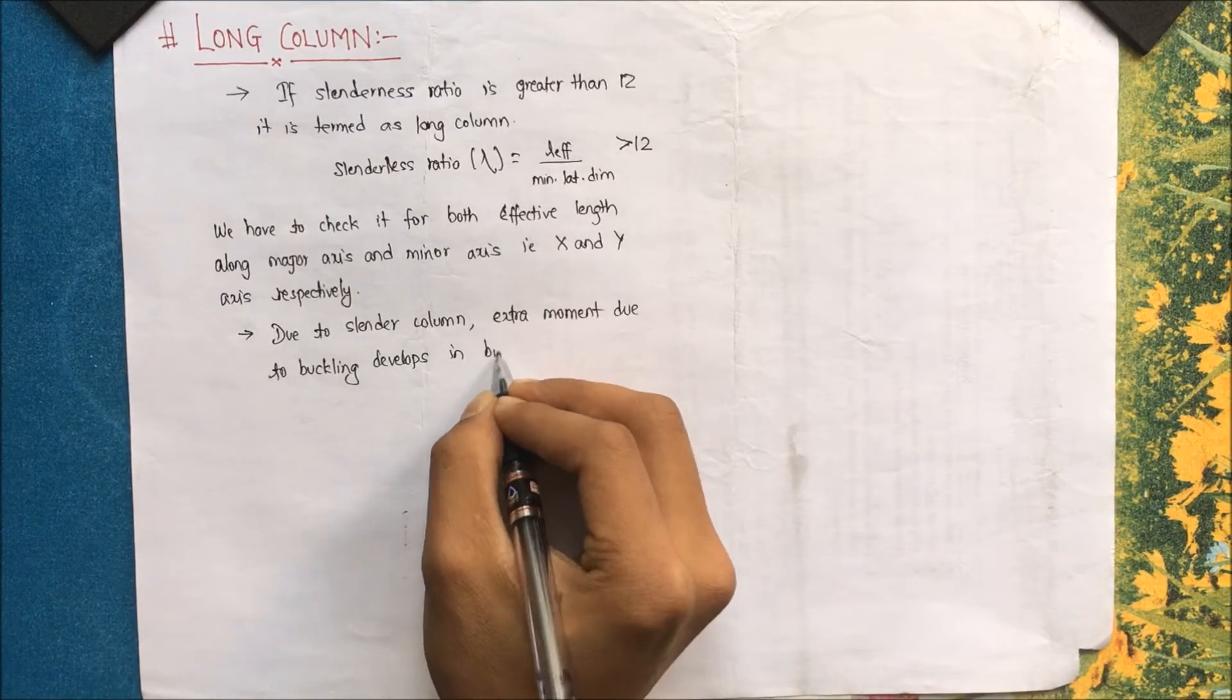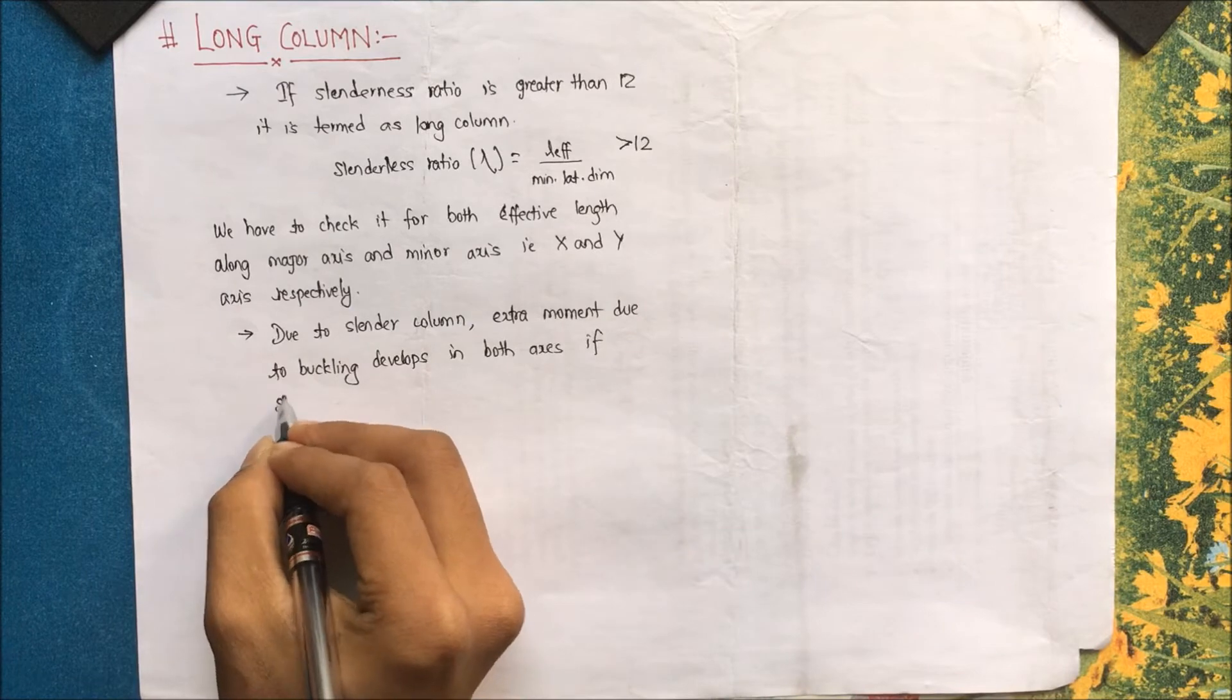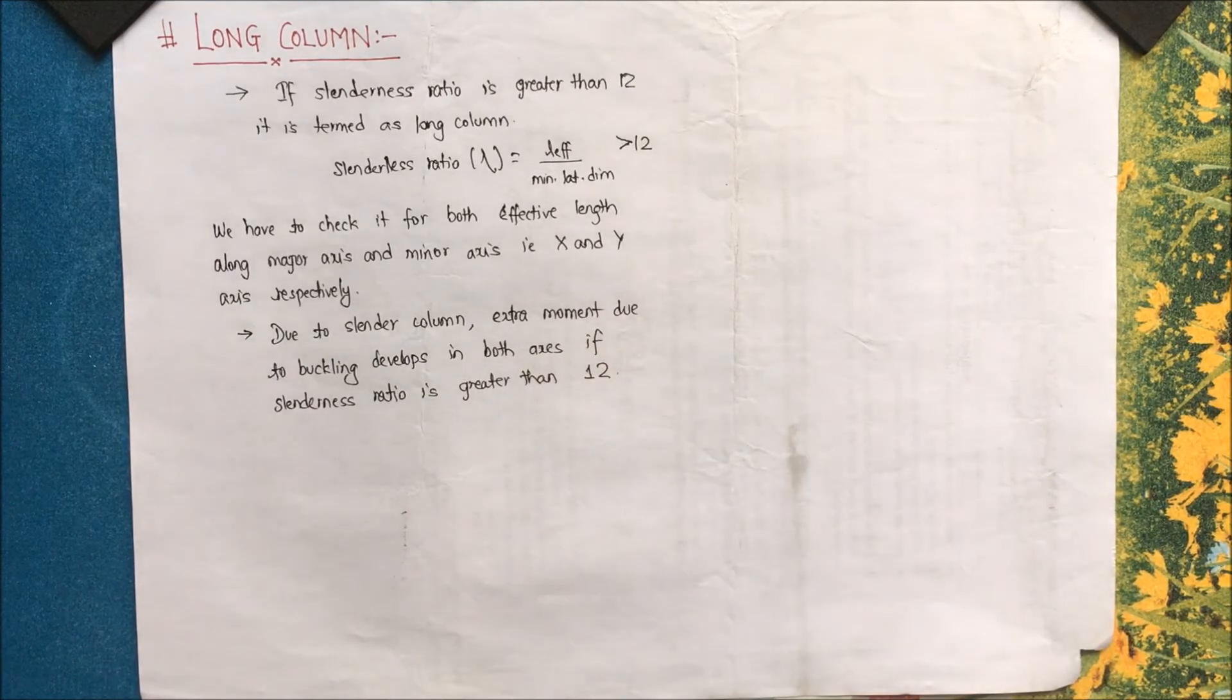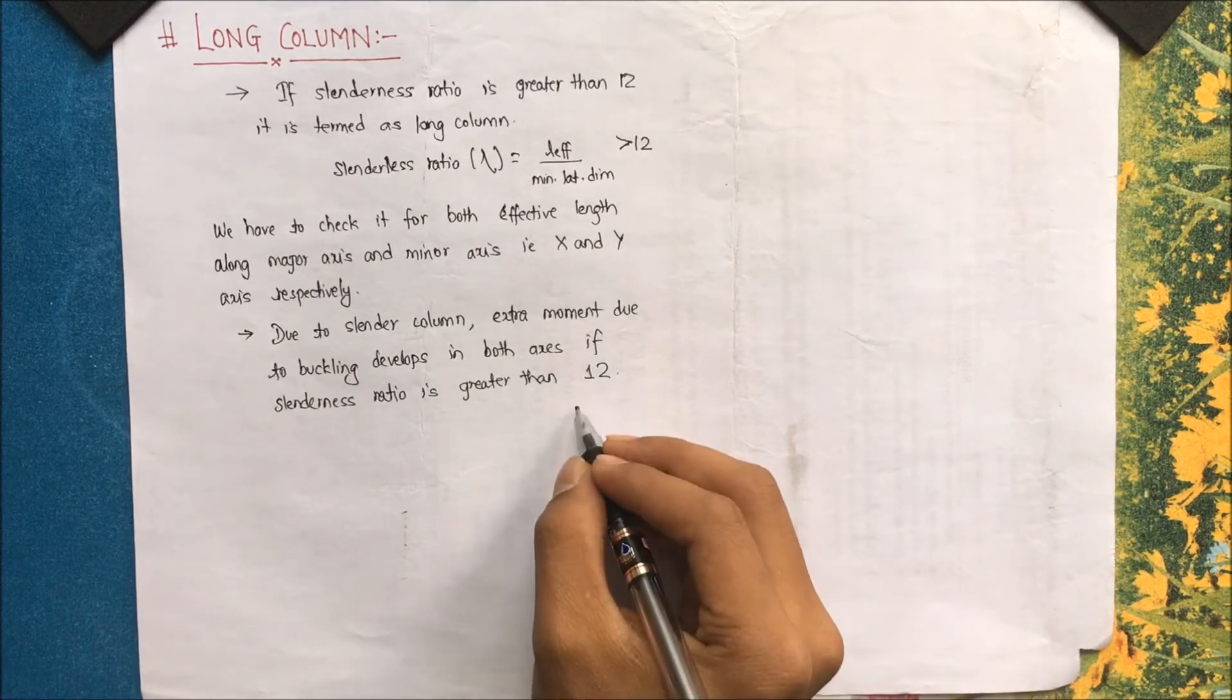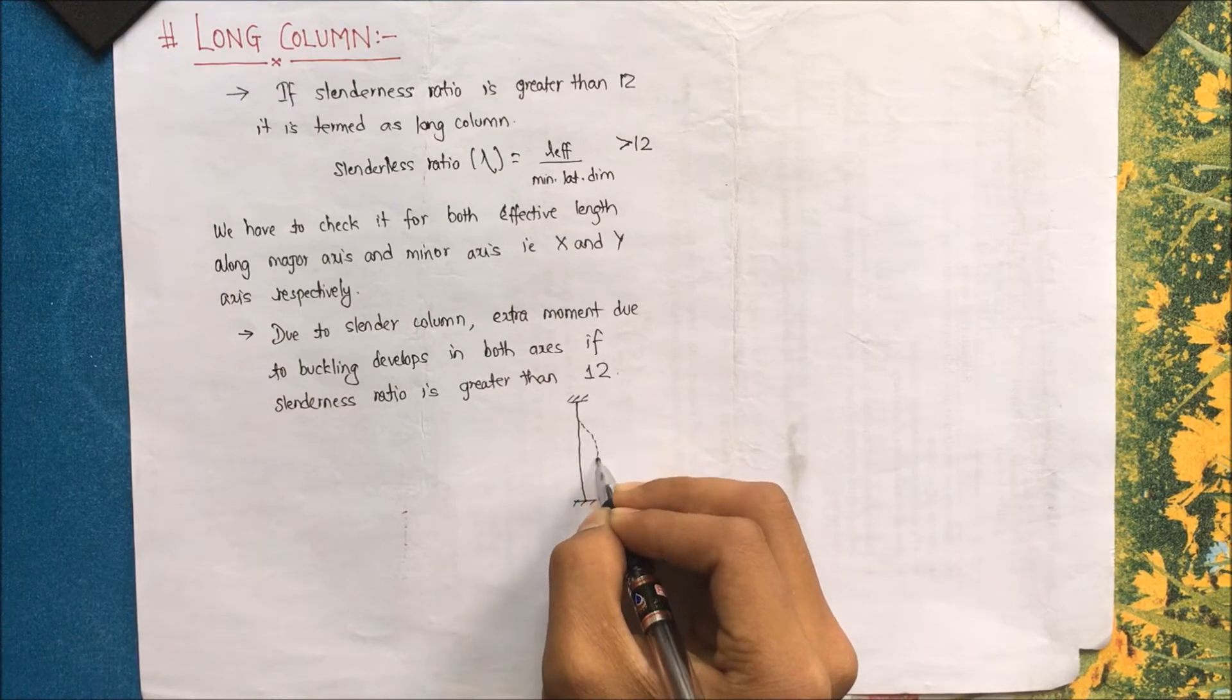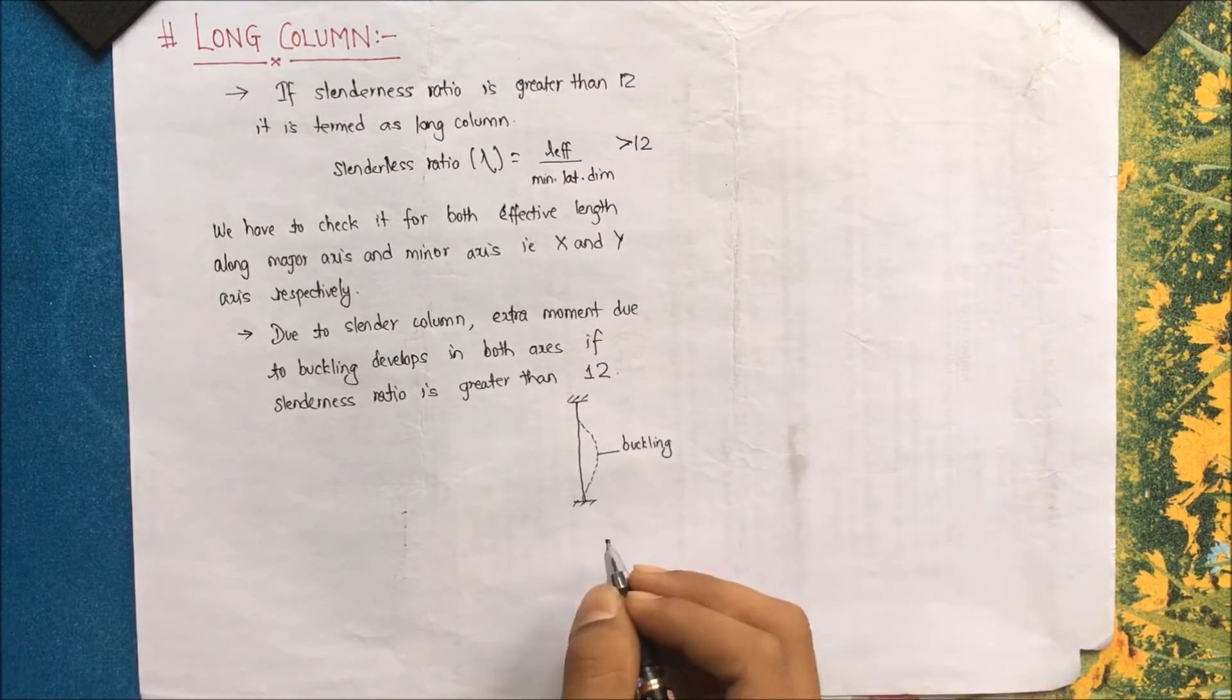Due to slender column, extra moment due to buckling develops in both axes if slenderness ratio is greater than 12. So let me draw a figure here. Suppose this is a column fixed on both ends. Now if it becomes slender then this buckling occurs. If the length is greater than that of the dimension, buckling occurs.